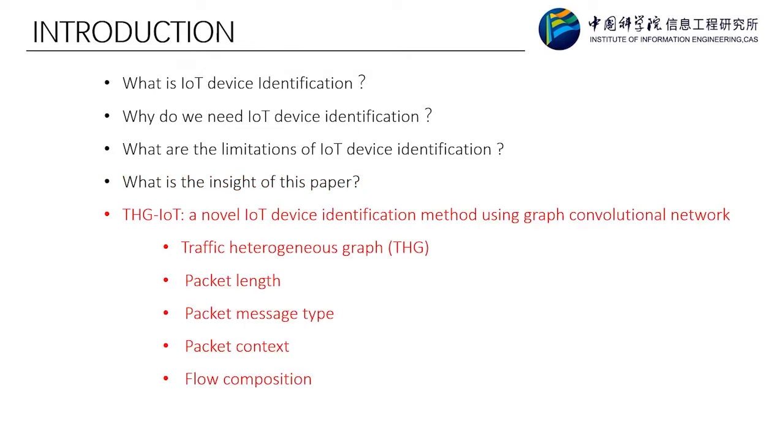In this paper, we propose THG-IoT, which is an IoT device identification method using graph convolutional network. We build a heterogeneous graph with multiple nodes and multiple edges for TLS traffic, named THG. The benefit of THG lies in that it is capable of reserving as much information as the original flow, such as packet length, packet message type, packet context, and flow composition.